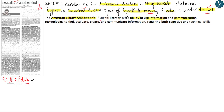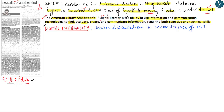The American Libraries Association defines digital literacy as the ability to use information and communication technologies to find, evaluate, create, and communicate information, which requires both cognitive and technical skills. In layman's terms, digital literacy would mean an individual's ability to find, evaluate, or compose clear information through writing and other mediums on a digital platform. Hence in digital literacy, digital platforms become the medium through which we are consuming and conveying information.